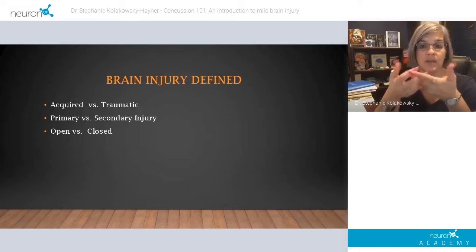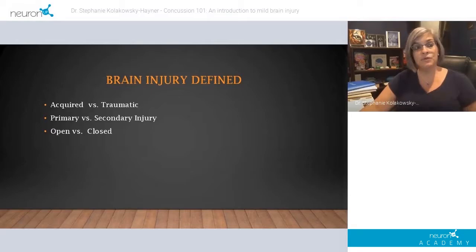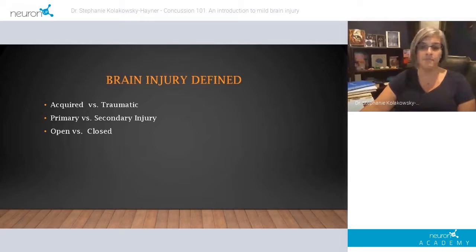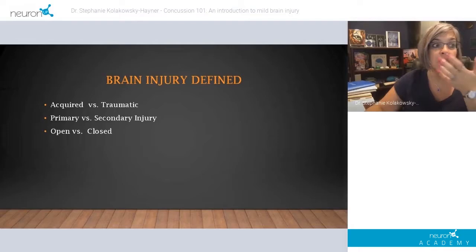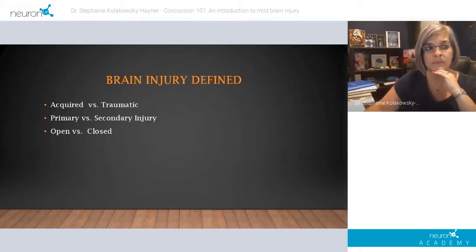Non-traumatic brain injuries include stroke, neurotoxic poisoning, hypoxia, and anoxia-type injuries, among a number of different etiologies. Hypoxia and anoxia involve basically a lack of oxygen to the brain, which causes brain cells to die. When they die, they release chemicals that could cause additional brain damage — a neurochemical cascade, if you will, of additional damages.